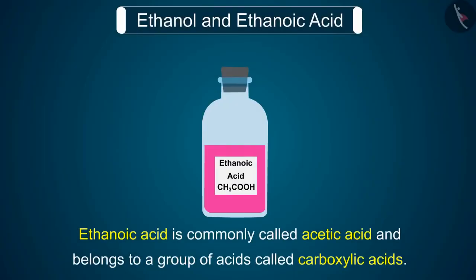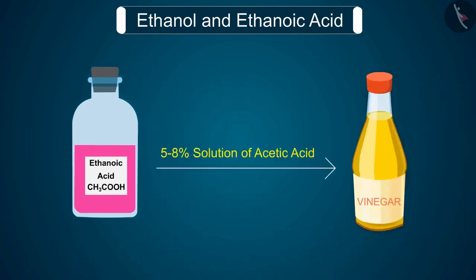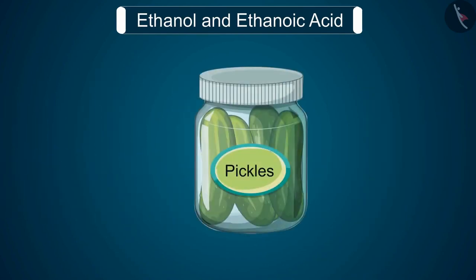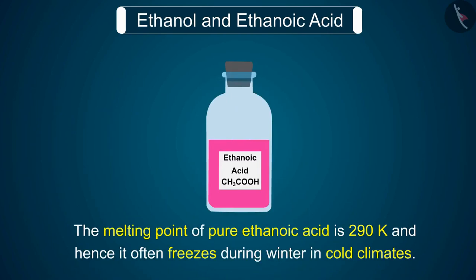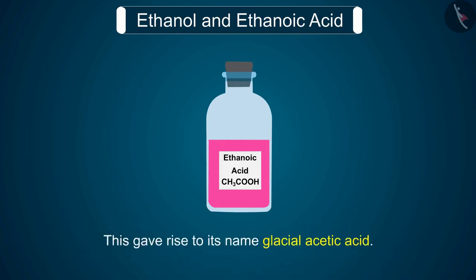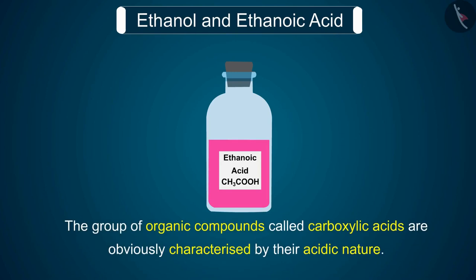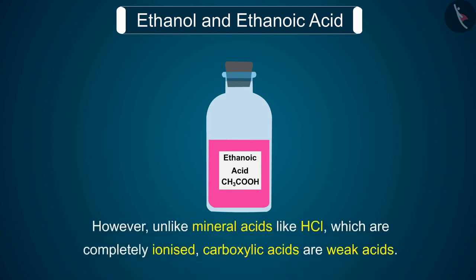Ethanoic acid is commonly called acetic acid and belongs to a group of acids called carboxylic acids. A 5–8% solution of acetic acid in water is called vinegar and is used widely as a preservative in pickles. The melting point of pure ethanoic acid is 290 K, and hence it often freezes during winter in cold climates, giving rise to its name glacial acetic acid. Unlike mineral acids like HCl which are completely ionized, carboxylic acids are weak acids.